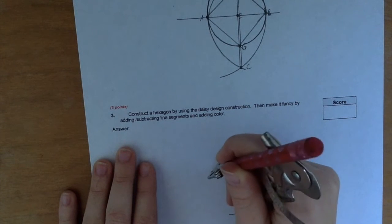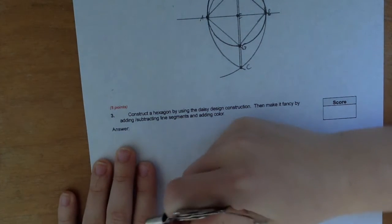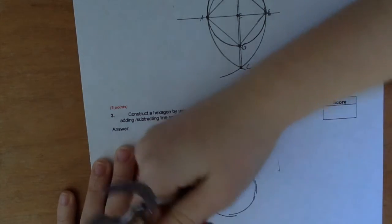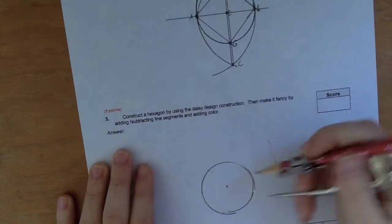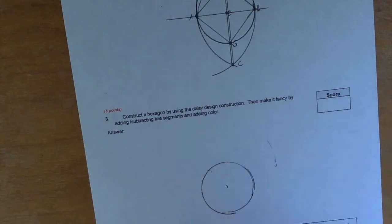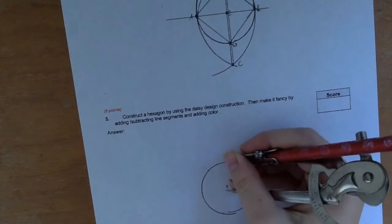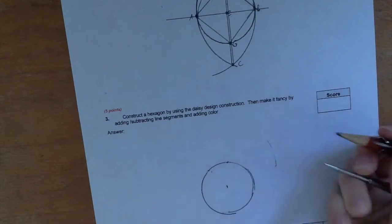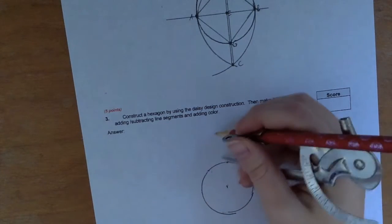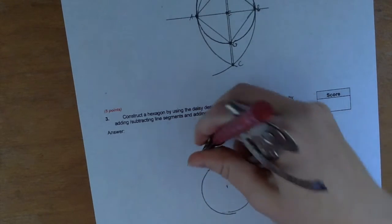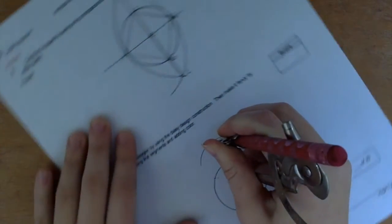Anyway, then the next thing you do is you choose a point. Should probably write this down. A little point right there. I'm not even gonna label it. And then you draw a circle around that too.